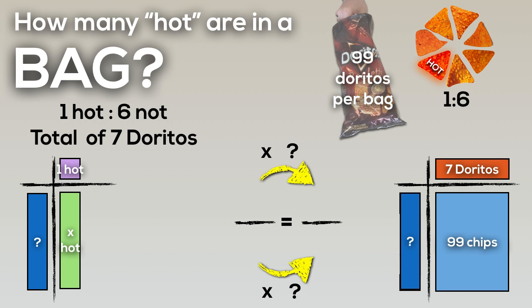We can also use our proportion to set that up, so it's going to look something like this: one over seven chips total. So one hot out of seven chips total is the same as X hot over 99 or so chips total.